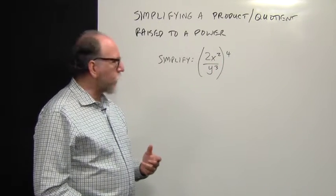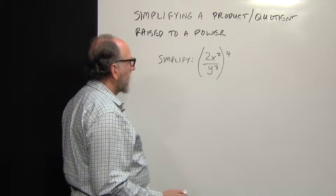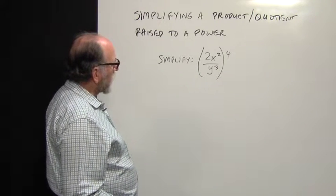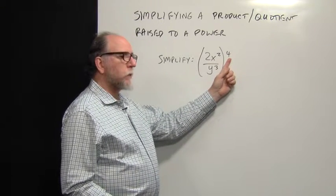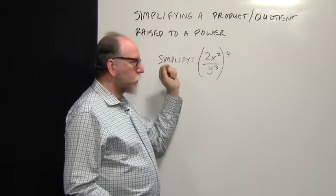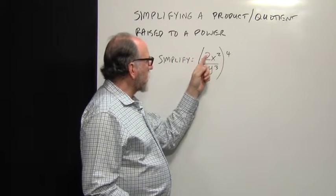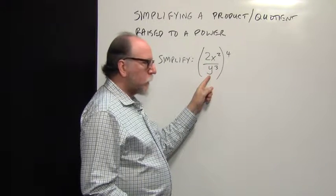So what do we do first? Well, there are a couple of approaches, but the most likely one would be to distribute this power using the power of a product and the power of a quotient rules to each of the factors in this expression.